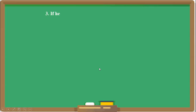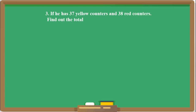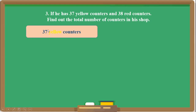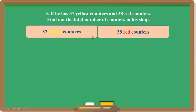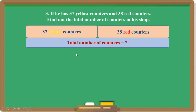Now see question number 3. Mr. Chandra has 37 yellow counters and 38 red counters. Find out the total number of counters. For 37, that is 3 tens and 7 ones. For 38, that is 3 tens and 8 ones. We need to find the total number of counters.